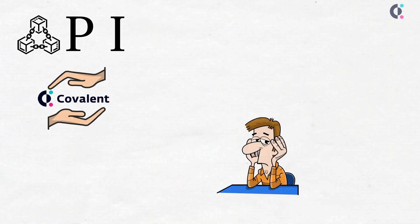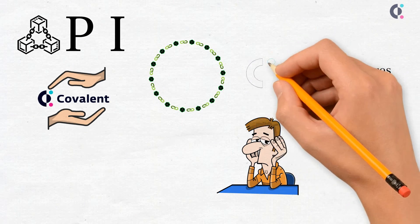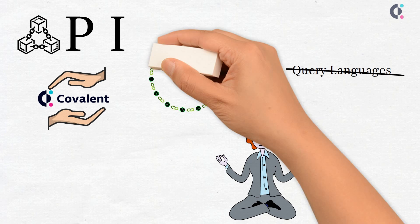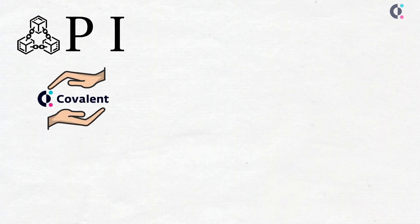The Covalent team created a project that allows you to get data from all blockchains without needing to know different query languages. So, how exactly does Covalent work? And what are its advantages?